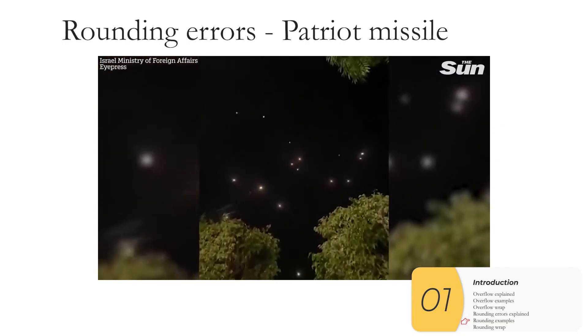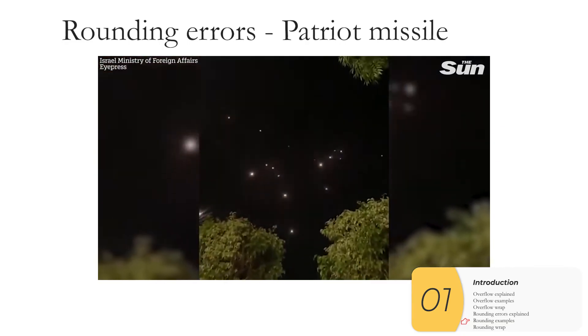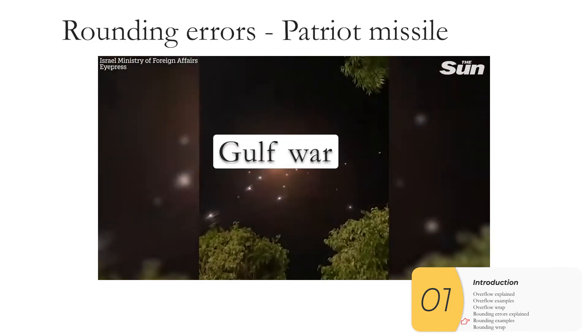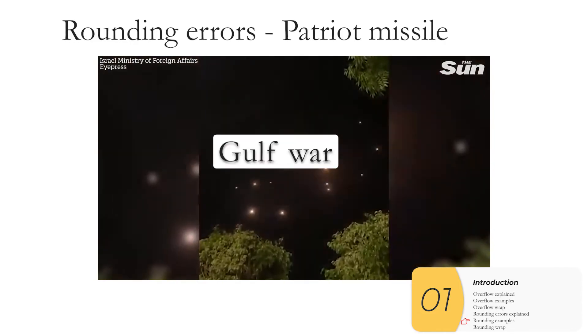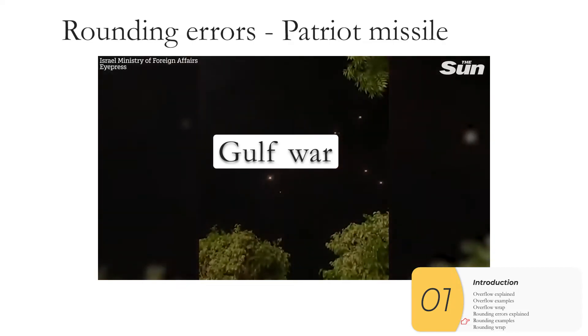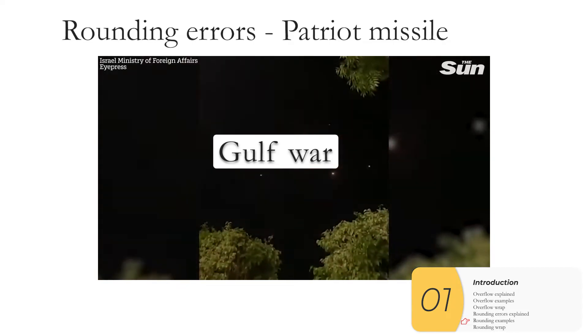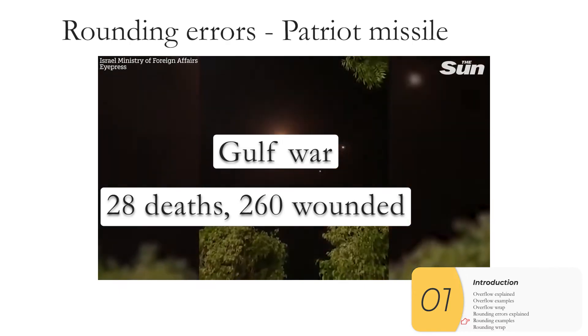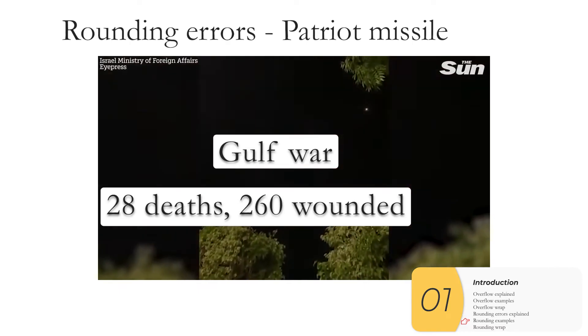This is the Patriot Defense Missile System in action, intercepting missiles from the sky. But back in 1991, in the Gulf War, the software was slightly buggy. Because of rounding errors, the numbers were just slightly off. And when intercepting missiles from far, far away, that's enough. The Patriot did not fire, and the missile hit, causing 28 deaths and over 200 injuries. The worst single event with respect to injury for the United States in the Gulf War.